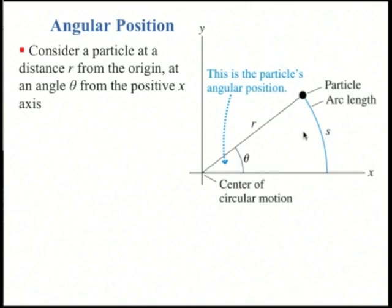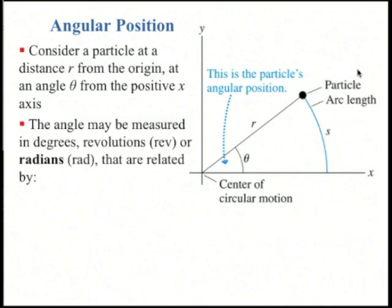If we want to describe where the particle is, we can talk about the arc length — how far it's traveled — or we can measure an angle. If there's an x-axis, we set up a line to the origin (the center of the circular motion) of length r, and measure the angle theta between that line and the x-axis. Theta increases if the circular motion is counterclockwise. This angle can be measured in degrees, in revolutions (one revolution is all the way around), or in radians.